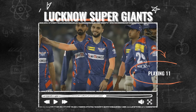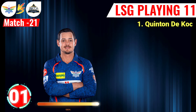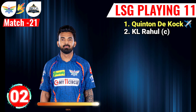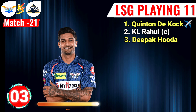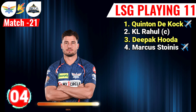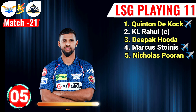Team Lucknow Super Giants final playing 11. No. 1 Quinton de Kock, left-hand batsman. No. 2 KL Rahul, right-hand batsman and captain. No. 3 Deepak Padikkal, right-hand batsman. No. 4 Marcus Stoinis, right-hand all-rounder. No. 5 Nicholas Pooran, left-hand batsman.